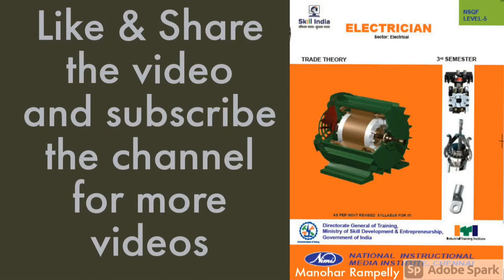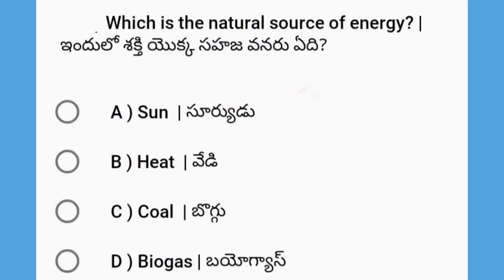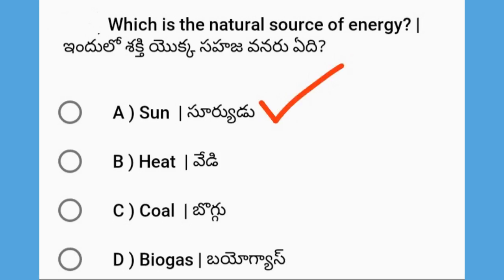We are going to look at which is the natural source of energy for electrical power generation. The options are sun, heat, coal, and biogas. We are going to look at the sun — the solar power station uses solar panels with electric power. So the answer is sun.